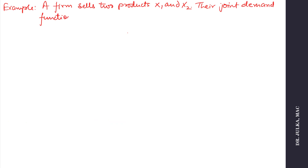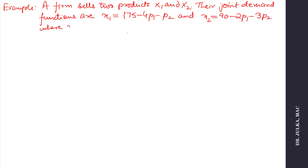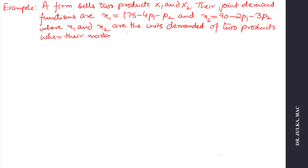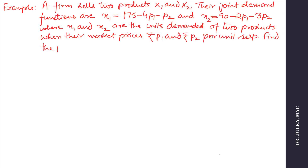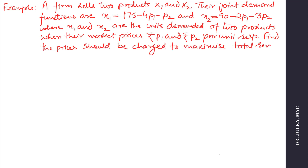Next example. A firm sells two products x1 and x2. Their joint demand functions are x1 equals 175 minus 4p1 minus p2 and x2 equals 90 minus 2p1 minus 3p2, where x1 and x2 are the units demanded when their market prices are Rs. p1 and p2 per unit respectively. Find the prices that should be charged to maximize total revenue of the two products, and also find the maximum revenue.